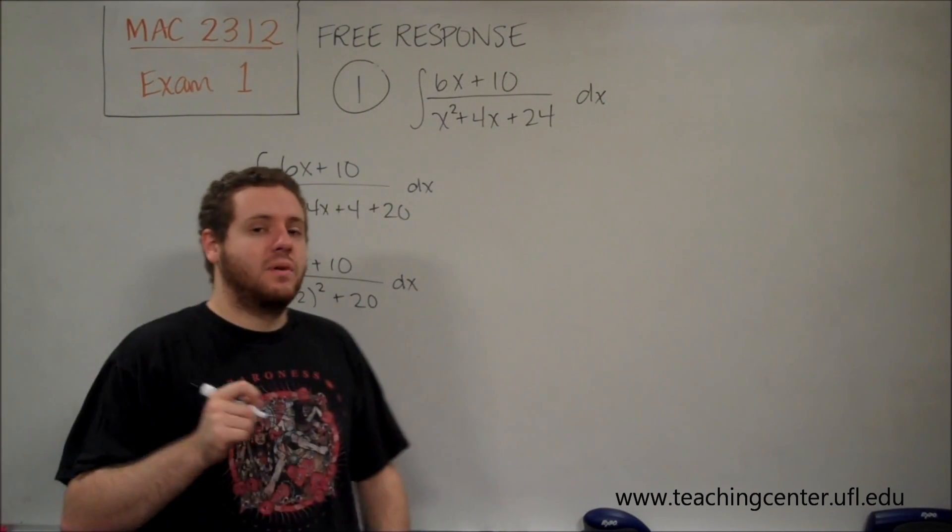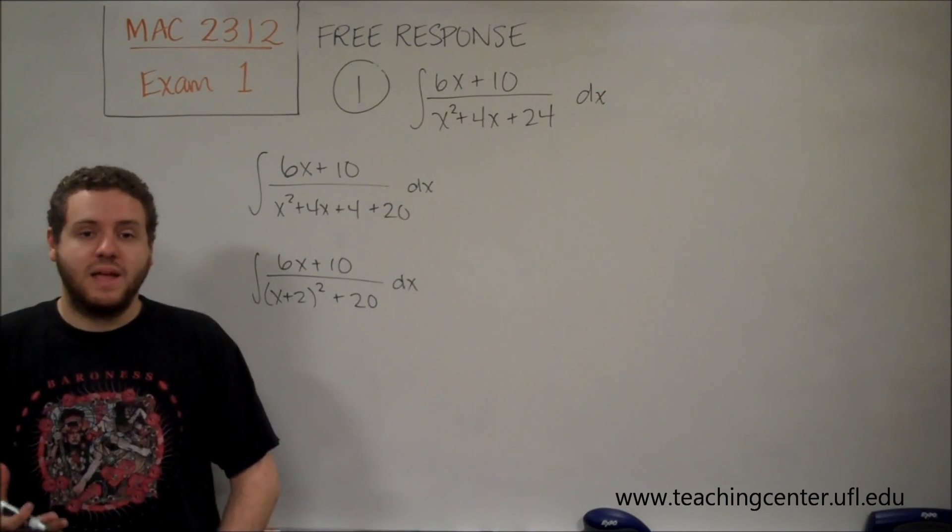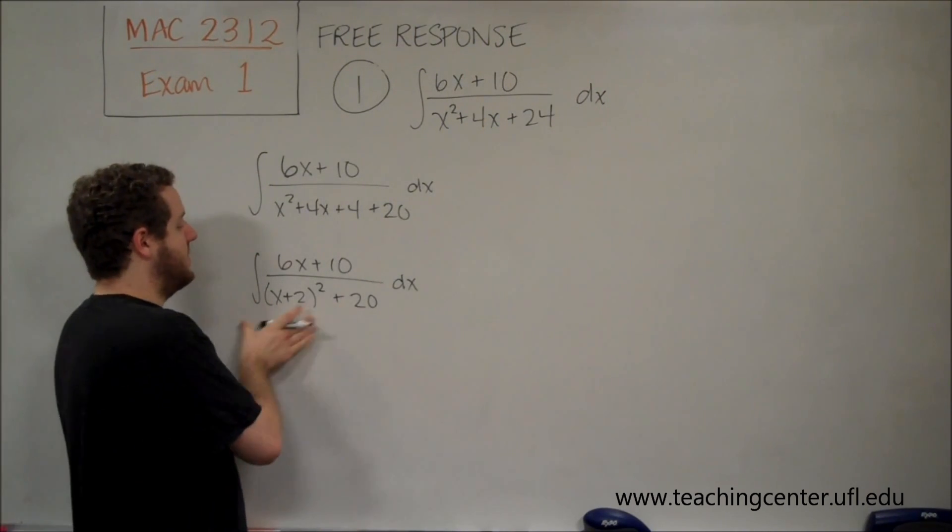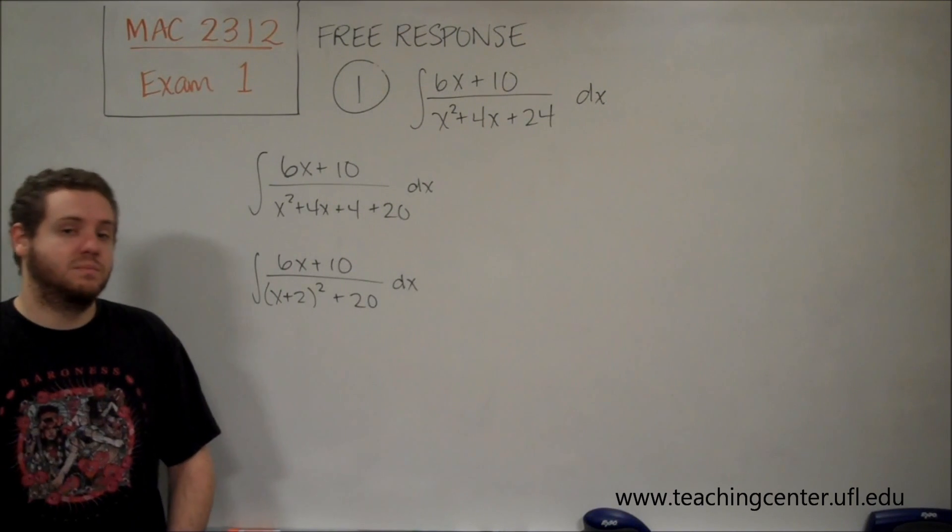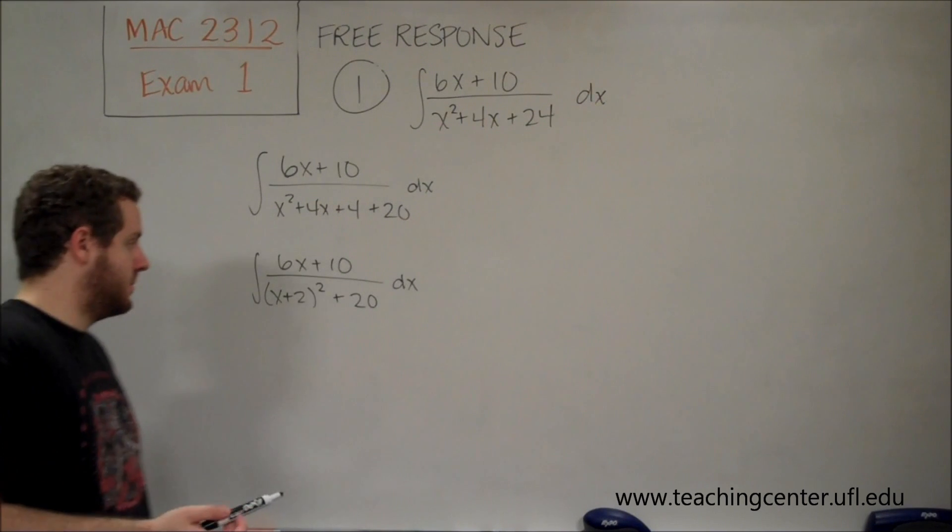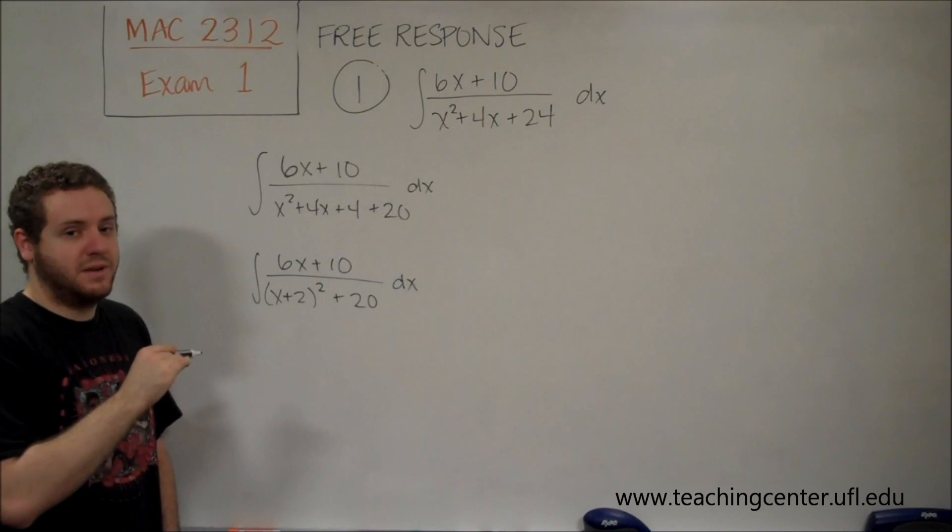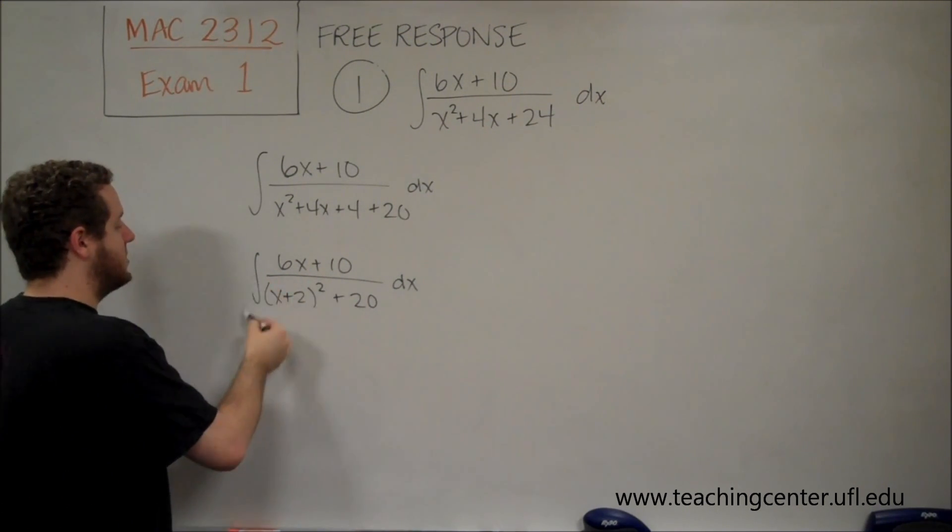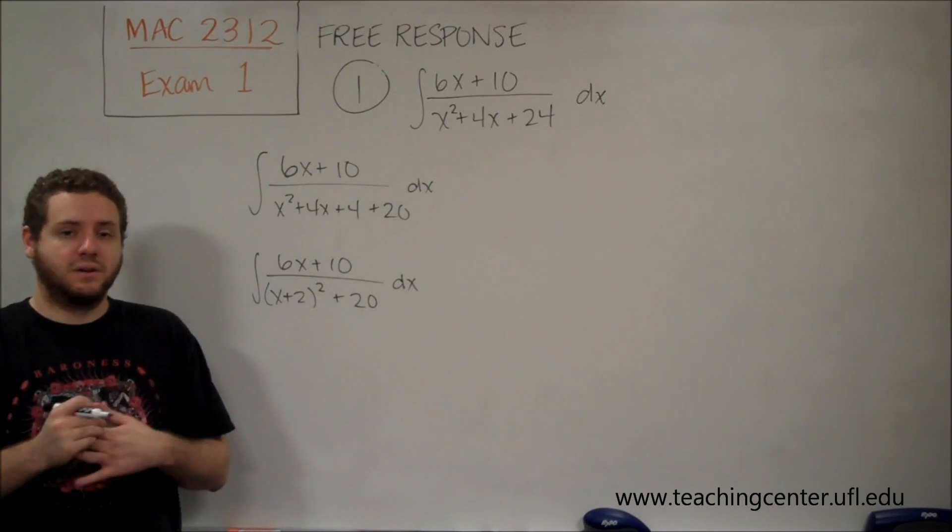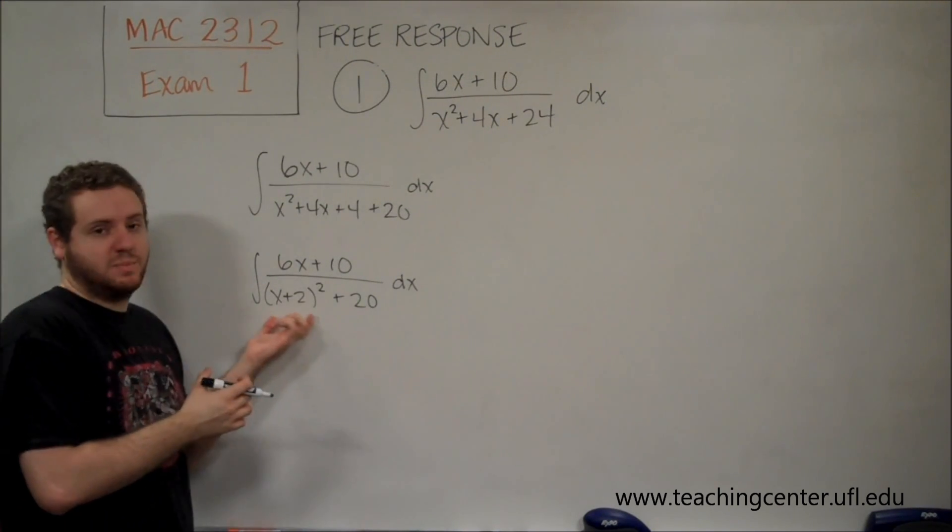So remember that you have a function. A function will work out to be an ln when you do the integral if the derivative of the bottom is the top. So if the derivative of the bottom is the top, or at least off by a constant, you will have an ln. That's always how that's going to work. So we can see here if we take the derivative of our denominator, this 20 is going to disappear. We're going to get 2 times x plus 2. And remember constants don't really matter here.